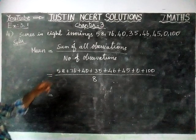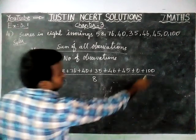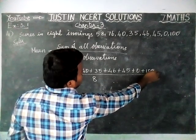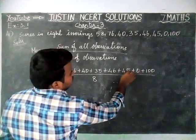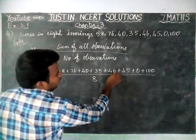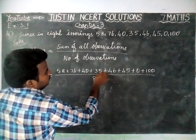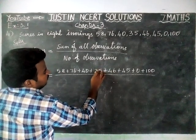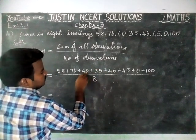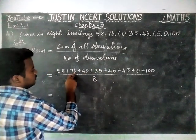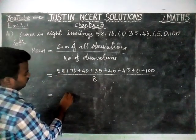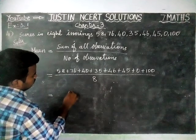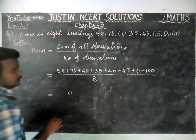We will add the ones digits first: 0, 5, 11, 16, 16, 22, 30. Remaining carry is 3.